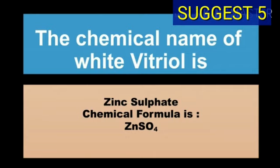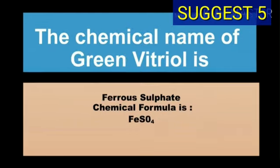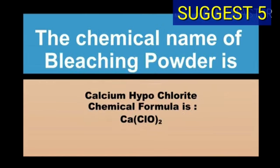The chemical name of green vitriol is iron(II) sulfate and chemical formula of green vitriol is FeSO4.